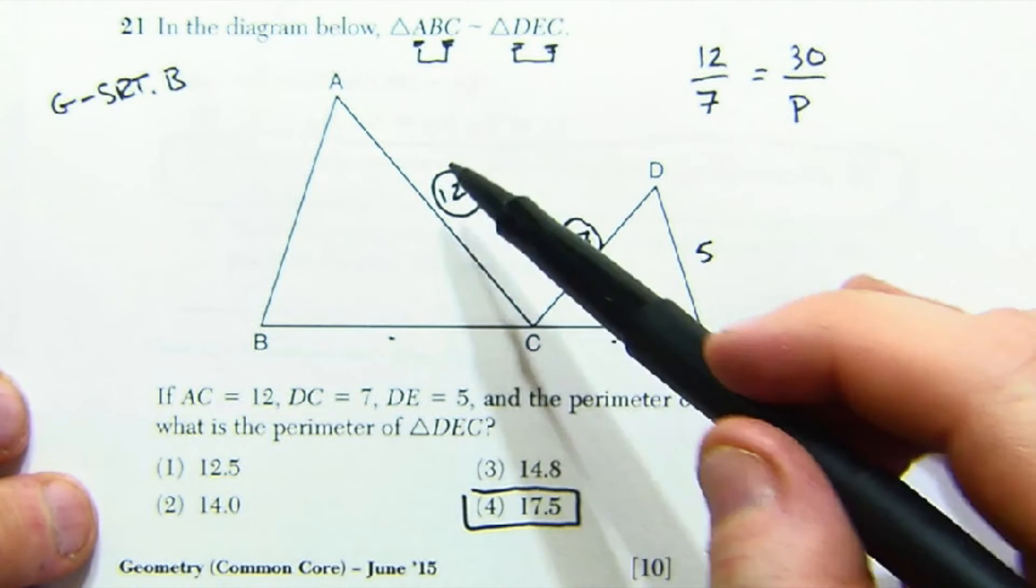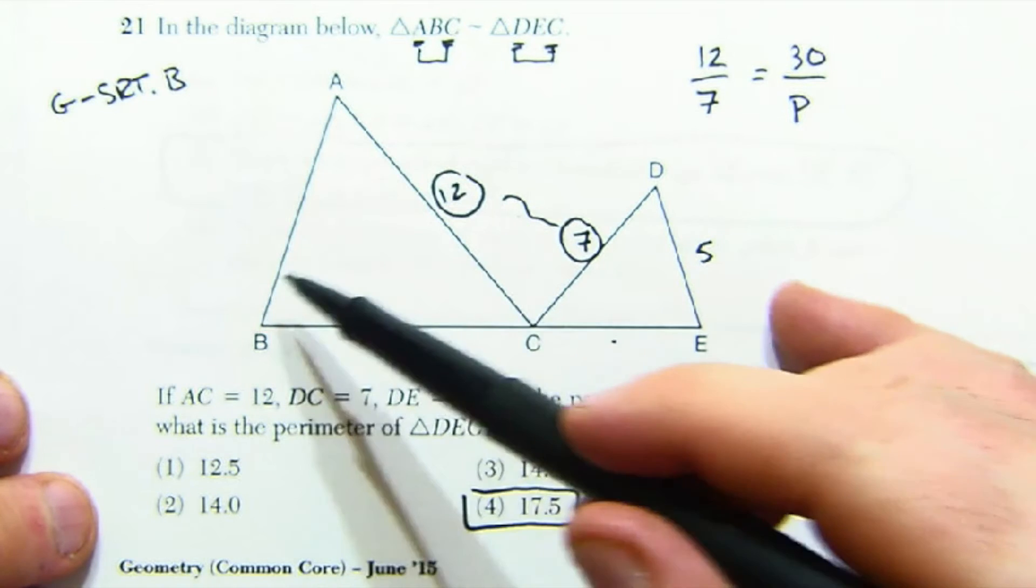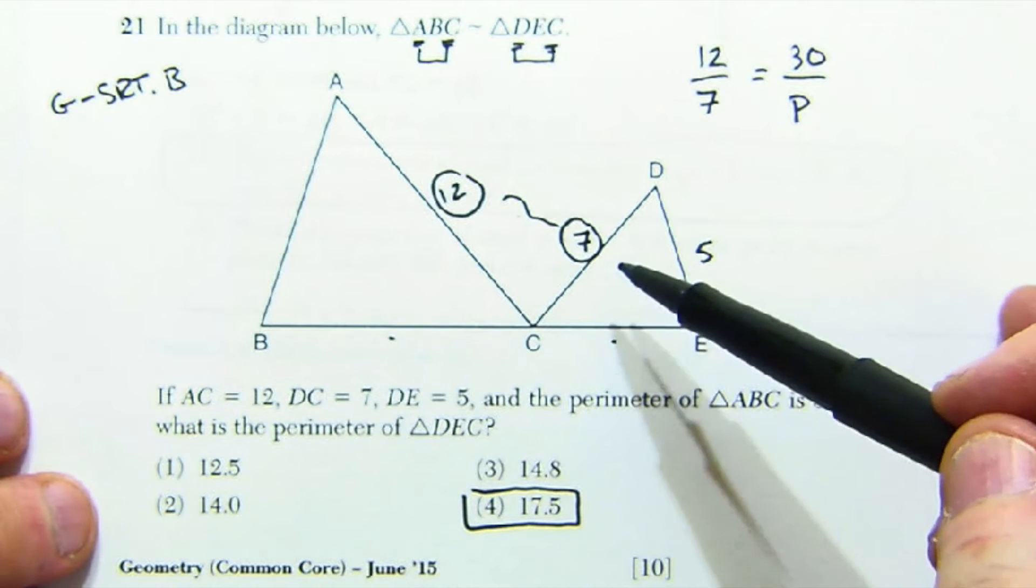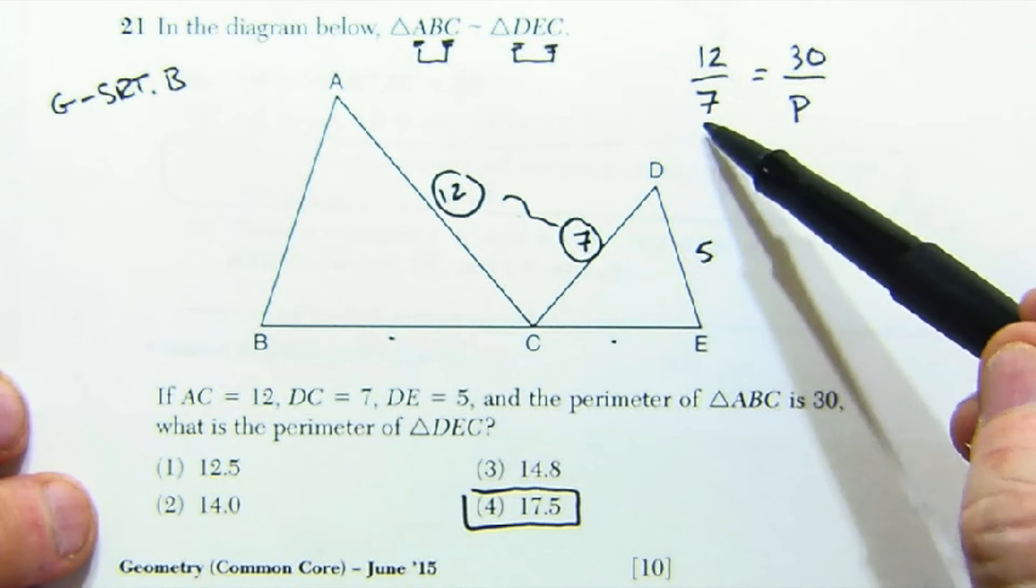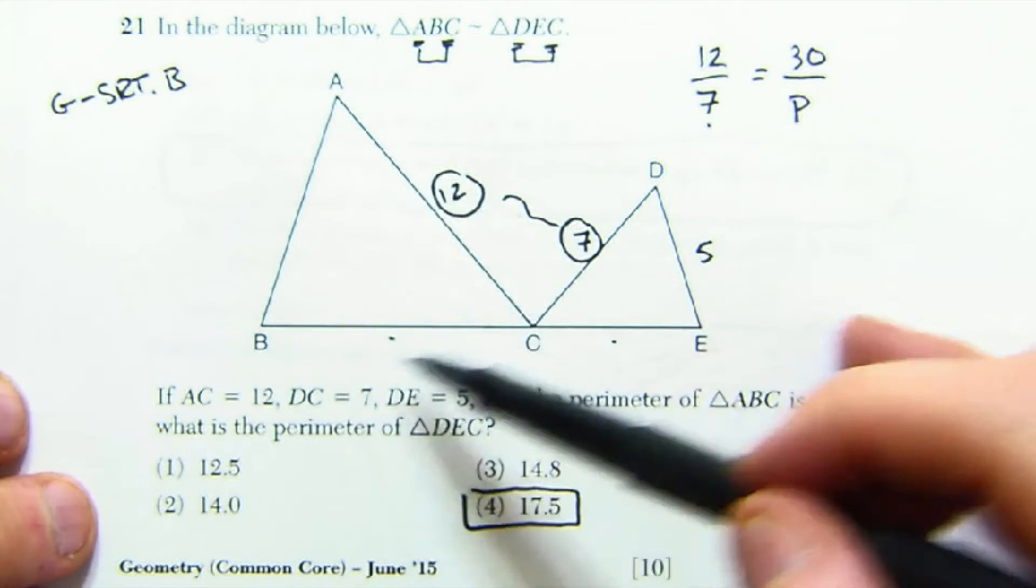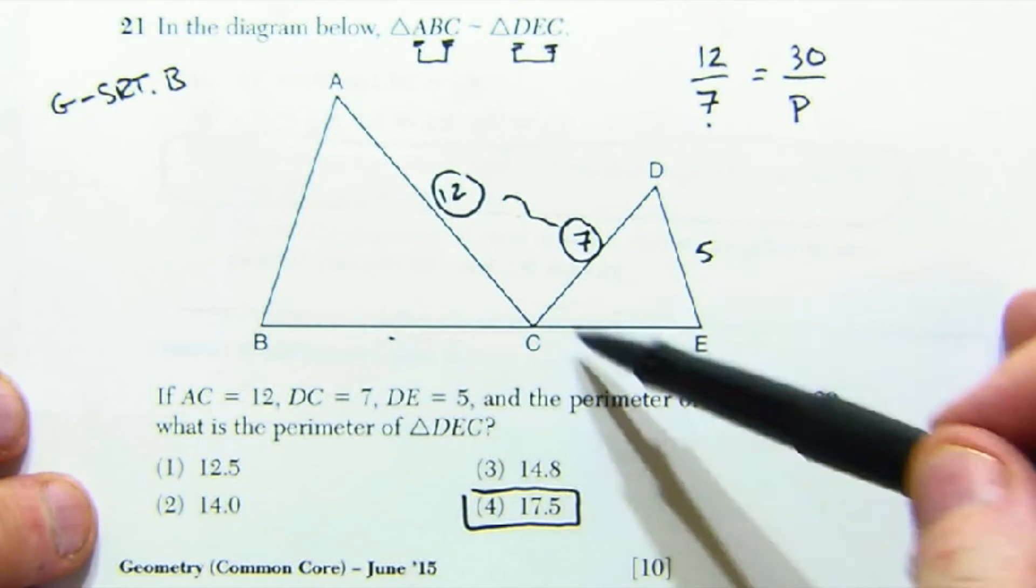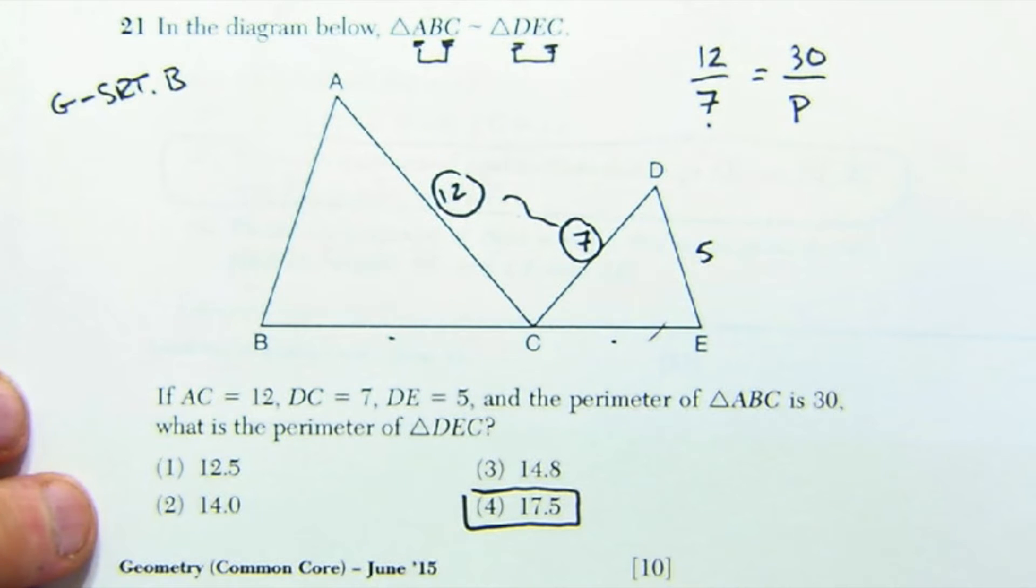But we do know that the perimeter of the big one is proportional to the perimeter of the small one. And so we say 12 is to 7 as the perimeter, 30, is to P, the small perimeter, and it solves out nicely.